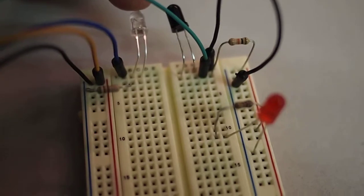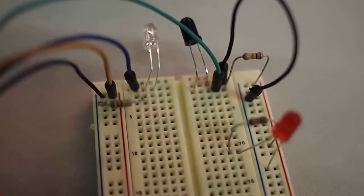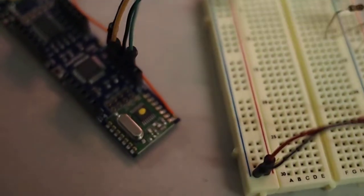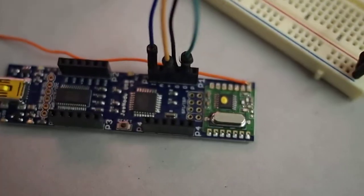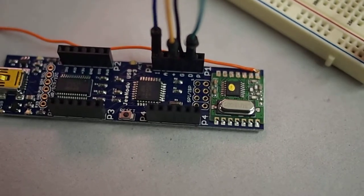Okay, so long leg of infrared LED goes to power. Short leg goes to ground. Okay, and that's going out to pins on my G-node here, which is a very cool device. There it is. So there's my G-node.